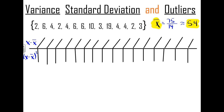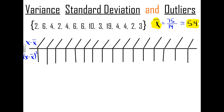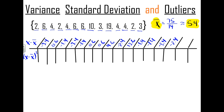Some of the differences will be negative, but we're going to end up squaring them so everything will be positive in the end. For example: 2 minus 5.4 gives negative 3.4; 6 minus 5.4 gives 0.6; 4 minus 5.4 gives negative 1.4. I'll pause and fill out all of the differences from the mean.